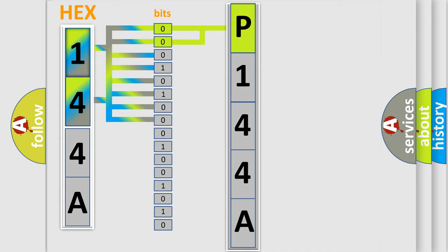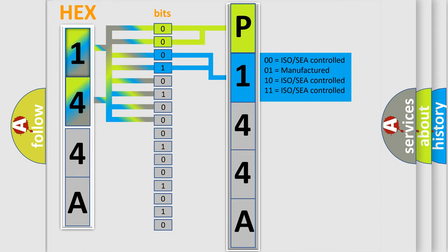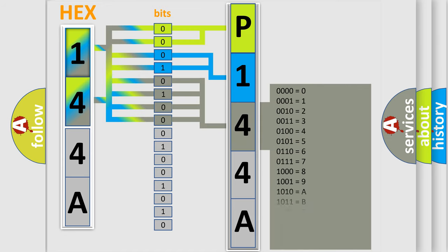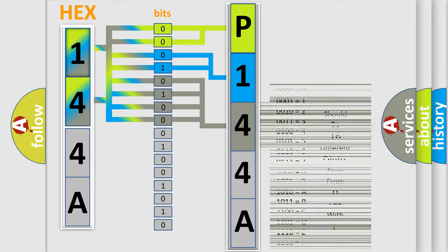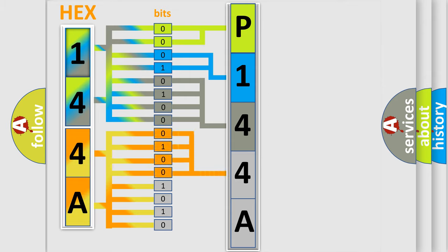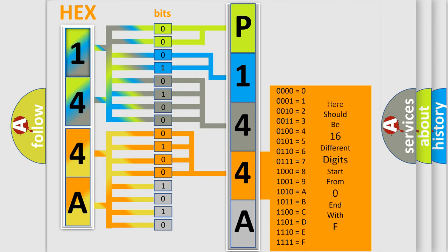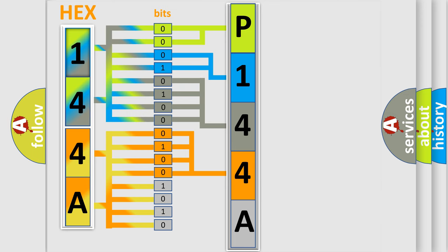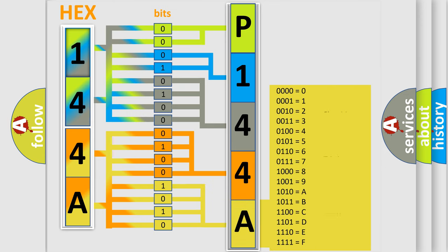The next two bits determine the second character. The last bits of the first byte define the third character of the code. The second byte is composed of a combination of eight bits. The first four bits determine the fourth character of the code.